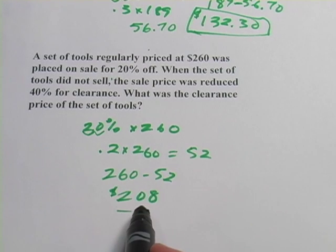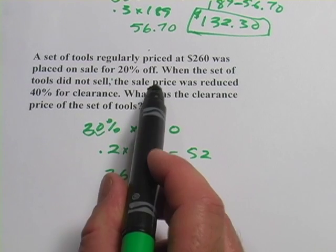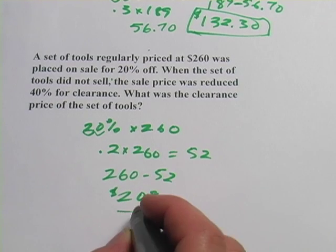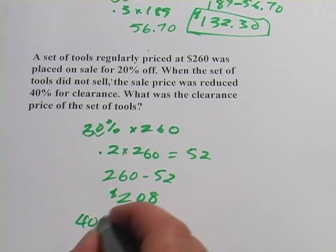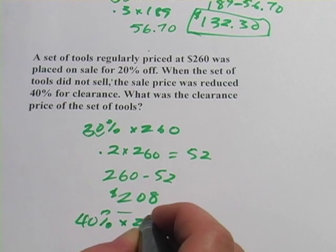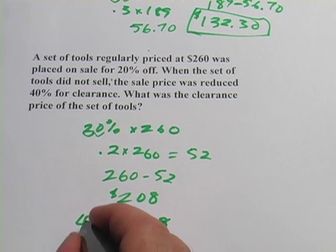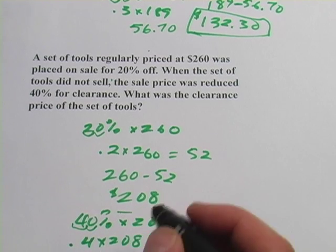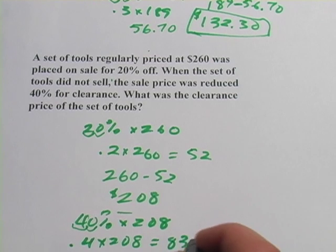Now, that's the price we use to figure out the second discount. It says it was reduced 40% after that. So 40% of 208, move the decimal place, .4 times 208, that is $83.20.